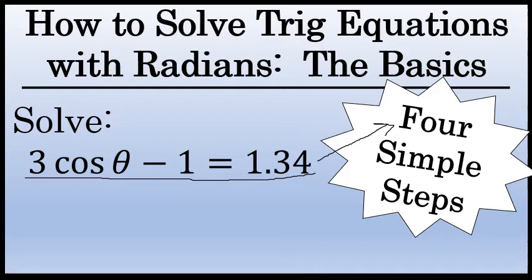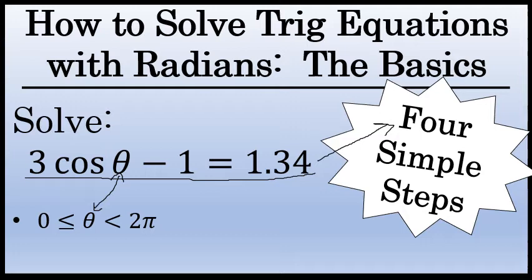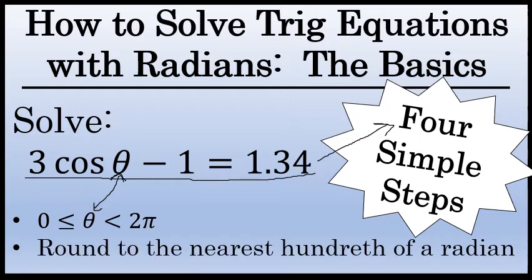There are some additional directions for this equation. Angle theta is between 0 and 2 pi radians. This trig equation, like most trig equations, has an infinite number of solutions, but we're only going to find the solutions between 0 and 2 pi radians. Angle theta will be measured in radians, and we're going to round our answers to the nearest hundredth — two decimal places. The solutions will be irrational, but we'll round them to two decimal places.